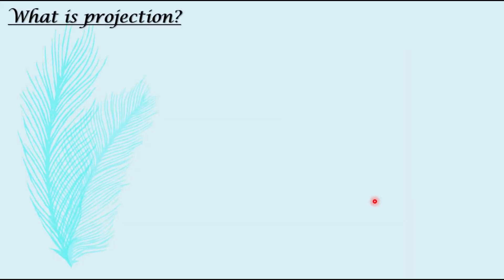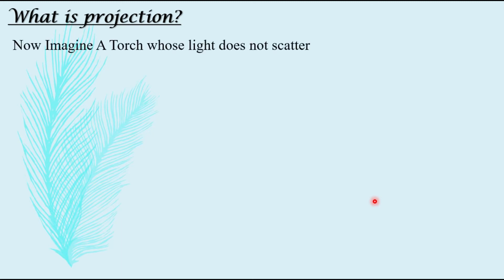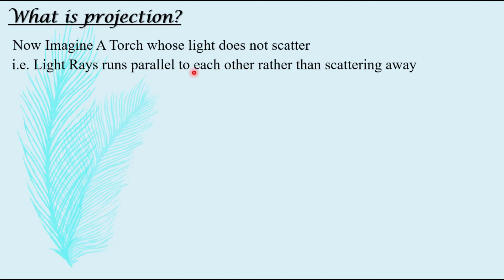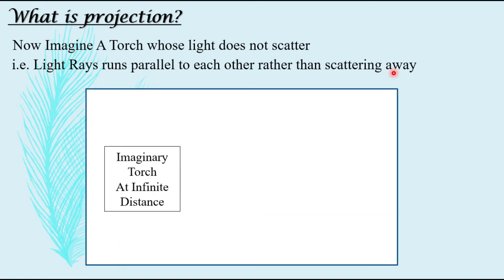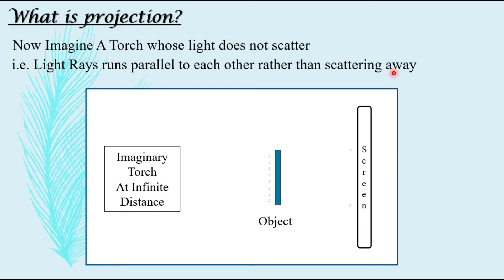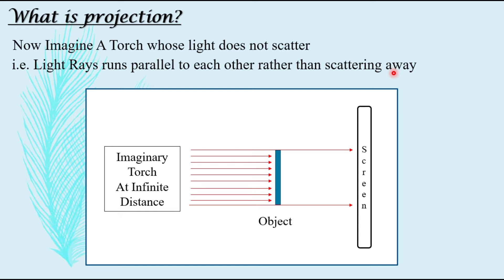Now, coming to the projection. Imagine a torch whose light does not scatter — that is, light rays run parallel to each other rather than scattering away. If you have an imaginary torch kept at infinite distance, with an object placed in front of it and a screen, when light rays are emitted running parallel to each other, whatever is obtained on the screen will have the same shape and same size as the object. That is why it is termed as projection.